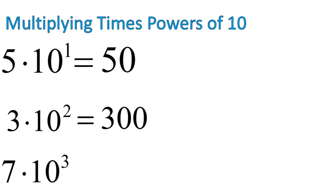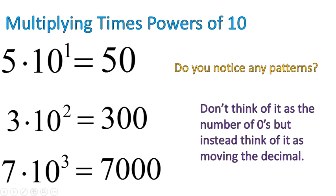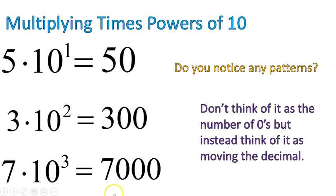3 times 10 to the power of 2 is 300. 7 times 10 to the power of 3 is 7,000. Again, there are some patterns here, and I would like to emphasize that the pattern should be thought of as not the number of zeros, but how far you move the decimal, and that's important. So with numbers like 5, 3, and 7, notice those numbers are here at the end. But with the number 5, there's an implied decimal that sits right here. With the number 3, it sits right there. With the number 7, it sits right there. All of those decimals start right here. And look at this — we're moving the decimal three places to the right, two places to the right, one place to the right.